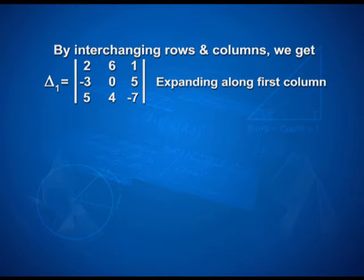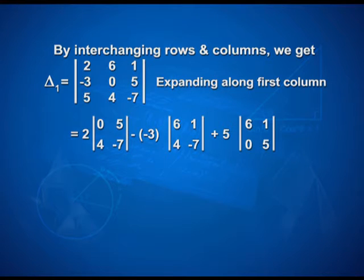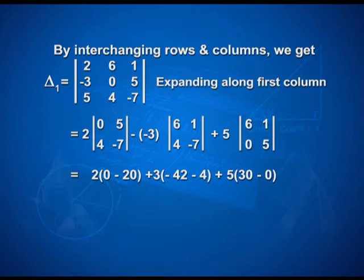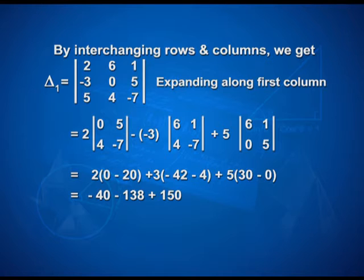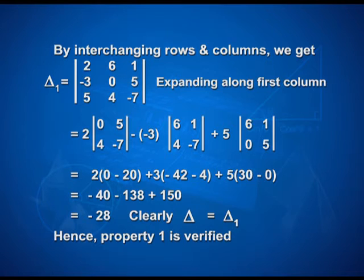Now let us expand along the first column. We get 2·det([0, 5; 4, -7]) - (-3)·det([6, 1; 4, -7]) + 5·det([6, 1; 0, 5]). On simplifying, we get 2·(0-20) + 3·(-42-4) + 5·(30-0), giving -40 - 138 + 150, that is -28. So clearly the previous determinant equals determinant 1. Hence, first property is verified: on interchanging rows and columns, the value of the determinant remains unchanged.